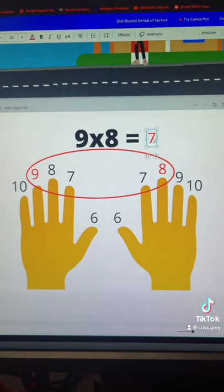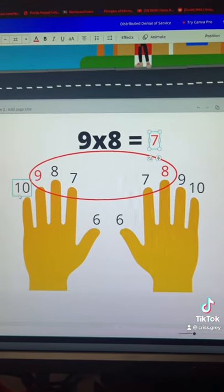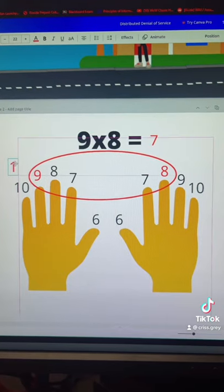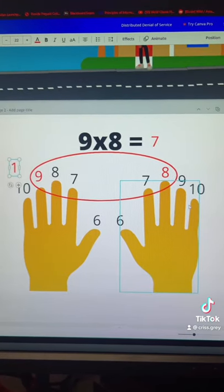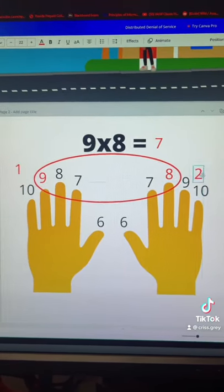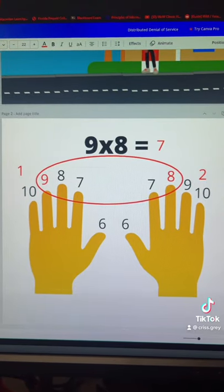That's where we get our seven. And then we have one finger left on this hand and two fingers on the other. So we're going to times that. One times two is two.